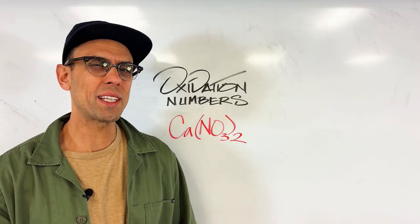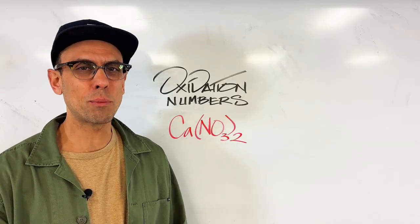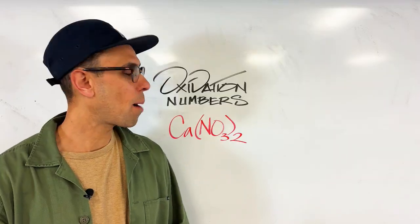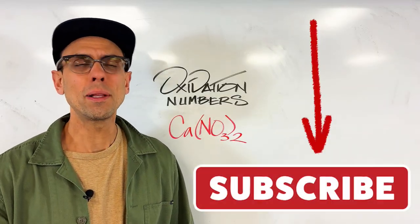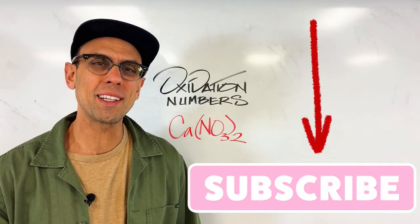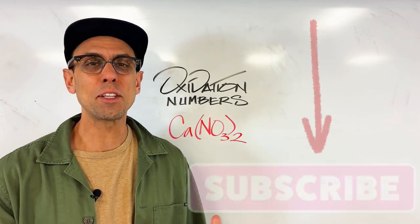So we're going to break it down exactly how do you find the oxidation numbers for the three elements in a compound with a polyatomic ion. Thanks for joining me. Please subscribe to the channel if you're interested in more of this kind of content and let's begin.